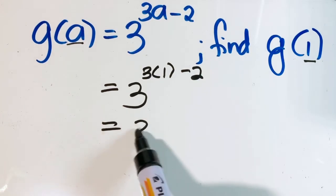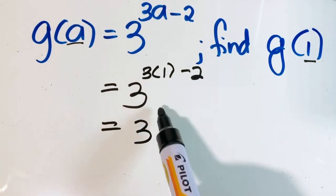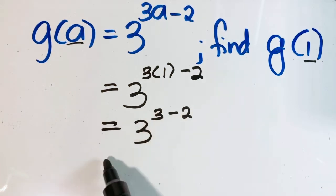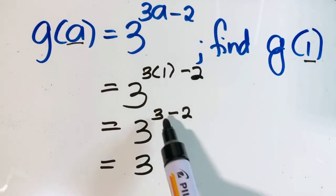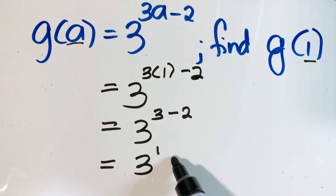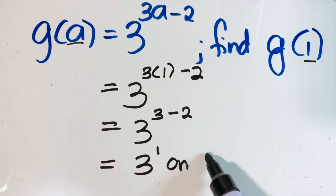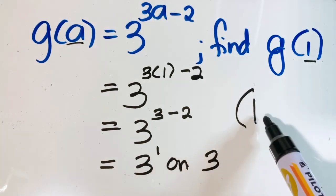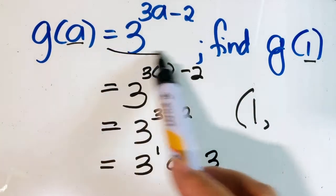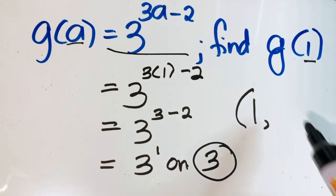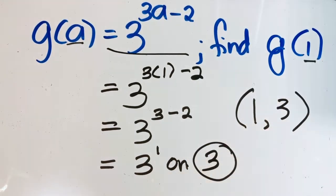So this is 3 raised to the power of 3 times 1, minus 2. What is 3 times 1? That is 3, minus 2 equals 1. So this is 3 to the power of 1, which is 3. Therefore, when x is 1, given this function, your y is 3.